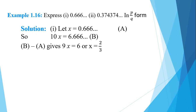Let x equal 0.6 recurring. Then 10x equals 6.6 recurring. Since x equals 0.6 recurring, subtracting gives 9x equals 6, therefore x equals 6 by 9, which simplifies to 2 by 3.